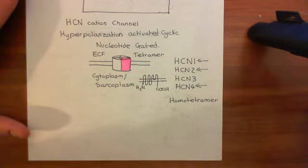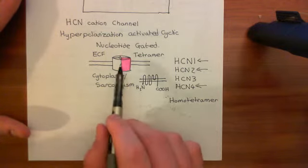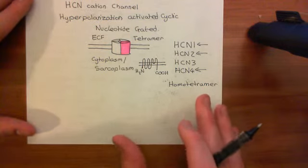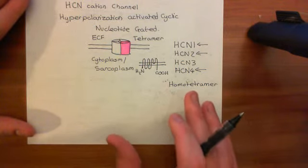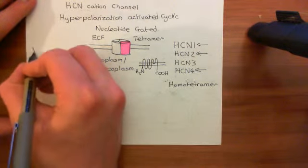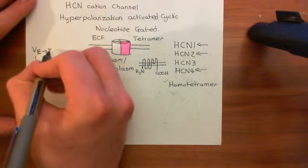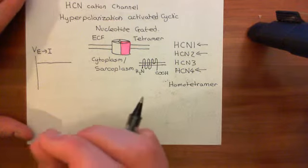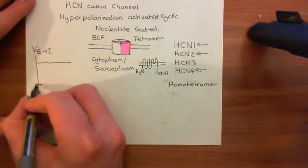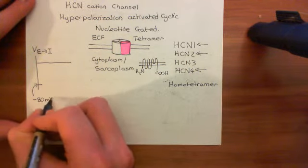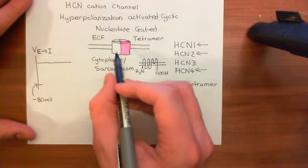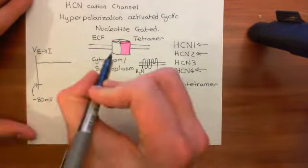All of these HCN channel subunits present within the sinoatrial node will assemble into HCN channels. They activate when you have a hyperpolarized electrical potential difference across the cell membrane. When the electrical potential difference across the cell membrane of the sinoatrial node cell gets to around negative 80 millivolts, these channels open. Most ion channels are opened by depolarization - these are opened by hyperpolarization.